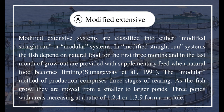The modular method of production comprises three stages of rearing. As the fish grow, they are moved from smaller to larger ponds. Three ponds with areas increasing at a ratio of 1:2:4 or 1:3:9 form a module.